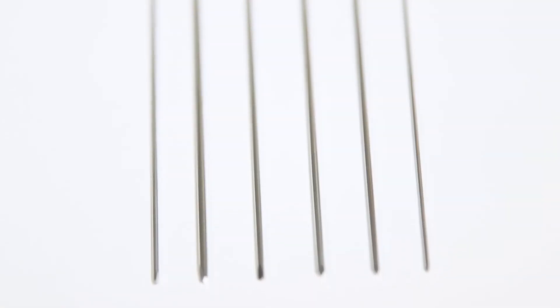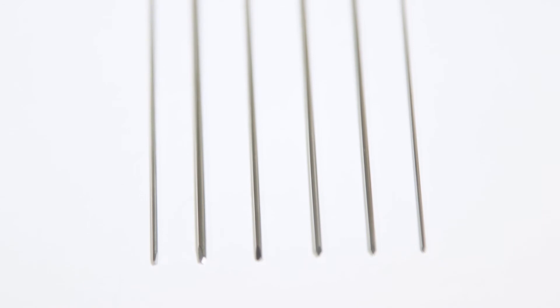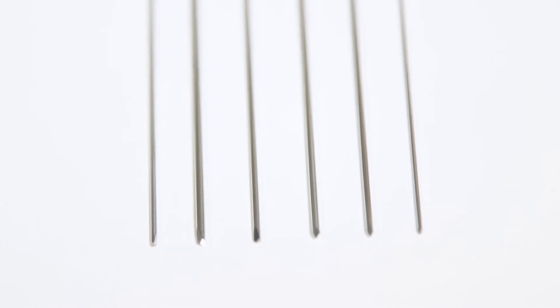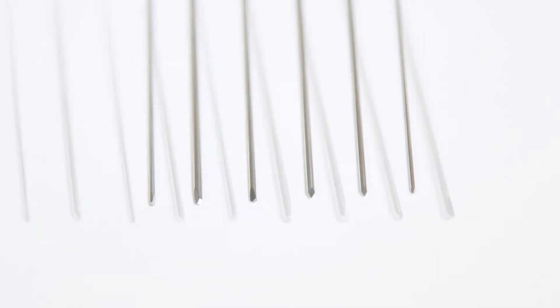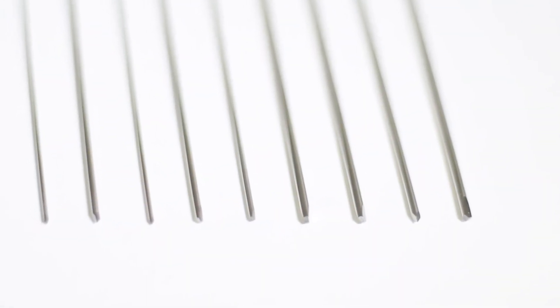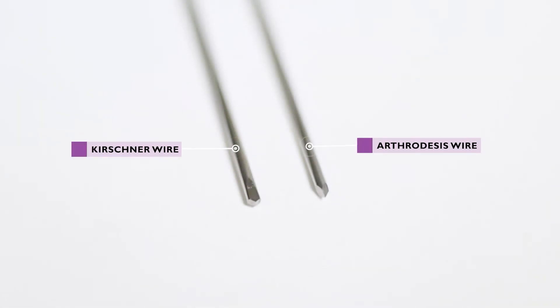Smooth pins may also be used for external fixation, but their use is generally reserved for fixation of fragments internally. The most common are arthrodesis wires and Kirchner wires. Arthrodesis wires have a trocar tip at each end, whereas Kirchner wires have a bayonet tip at one end and a blunt tip at the other.